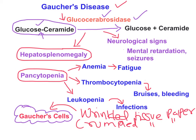The definitive treatment for Gaucher's disease is enzyme replacement therapy — replacing the enzyme glucocerebrosidase. Recombinant glucocerebrosidase is available for this purpose. The main hindrance is cost: it has been estimated that a Gaucher's disease patient needs approximately $200,000 US dollars per year for this treatment, because the disease is less common and recombinant enzyme production is costly.